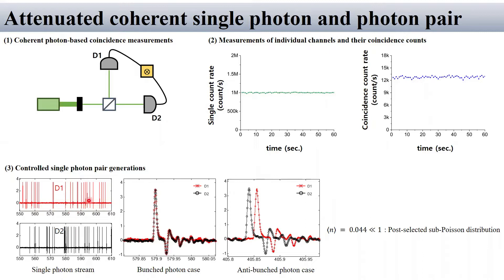In oscilloscope results, train of pulses are single photons. Channel 1 and channel 2 respectively corresponds to the D1 and D2. In bunched photon case, the two pulses are overlapped at the same time. But entire bunched photon results in non-overlapped pulses. So, the mean photon number is 0.044. It is relatively small and subject to sub-Poisson distribution.